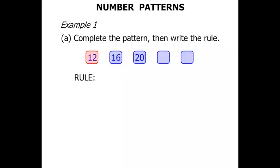Starting with 12, we are jumping up to 16. To do that we add 4. Then from 16 to jump up to 20 we also add 4. To complete the pattern let's keep on adding 4. So 20, if we add 4, we get 24.